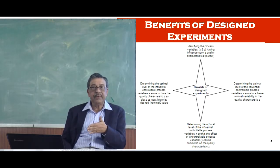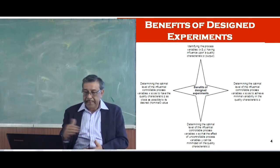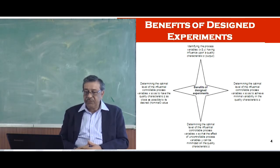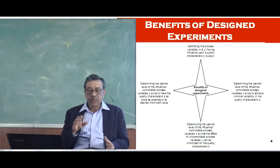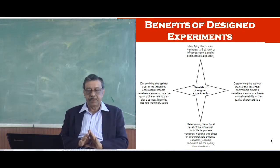At 9 o'clock position if you see determining the optimal level of influential process variables x so as to have the quality characteristic z as close as possible to the desired value. You have a desired value. You are changing the controllable variables in such a way that your output is as close as possible to the desired value. This is the aim of the experiment.